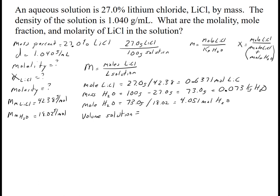For the volume of solution, I again have a mass of solution of 100 grams. Using the density I can find the volume: 100 grams divided by 1.04 gives 96.15 milliliters. To use it in the equation I need liters, so dividing by 1000 gives 0.09615 liters.